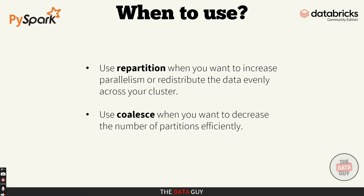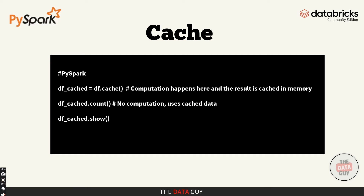Now that we've talked about managing partitions using repartition and coalesce, let's dive into two more critical concepts in Spark: cache and persist. If you're dealing with repeated transformations on the same data frame, these are your go-to tools for making sure you don't recompute the same data over and over. Every time you apply an action to a data frame — like counting rows or writing to storage — Spark will recompute everything from scratch, going all the way back to your original data source and running through all transformations. If your pipeline is complex, this recomputation can become really expensive, and that's where caching and persisting come in handy.